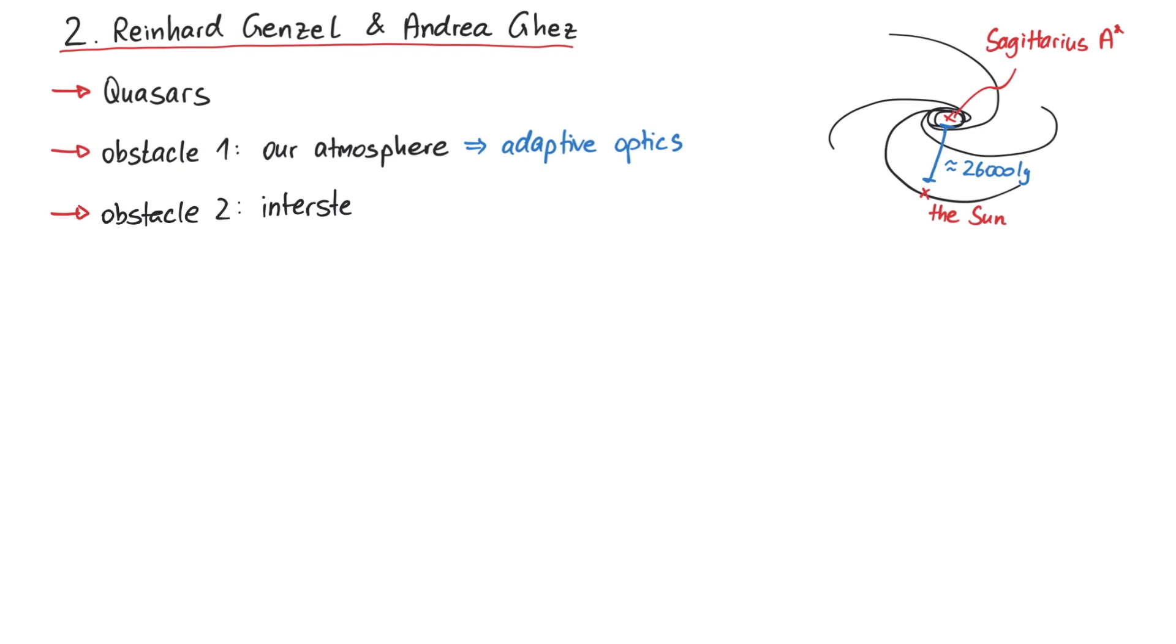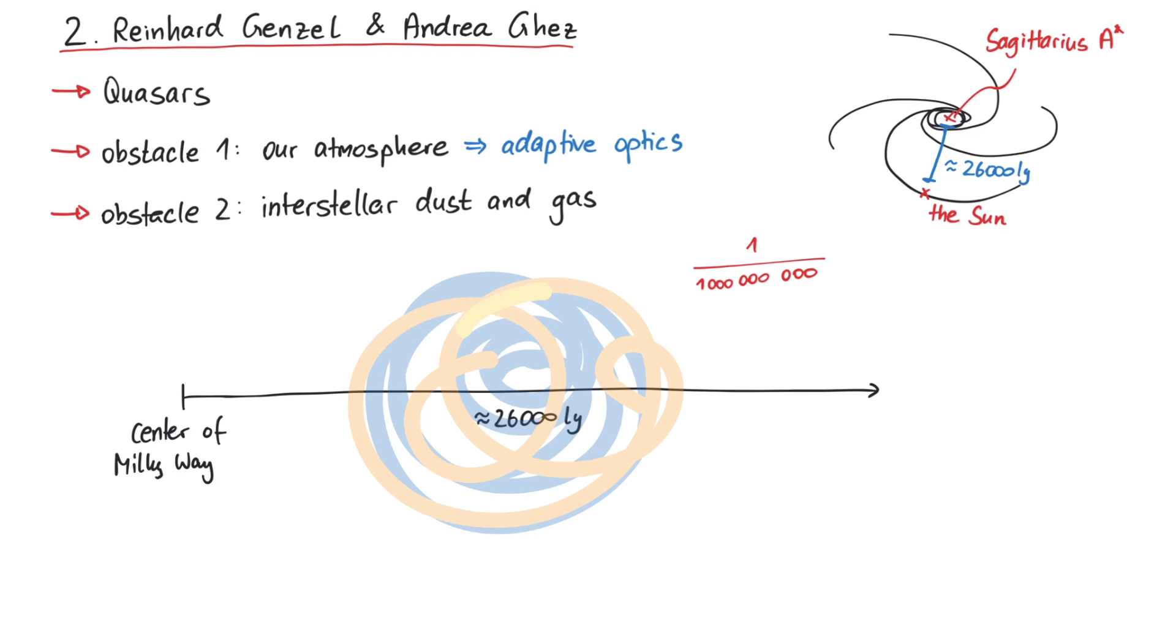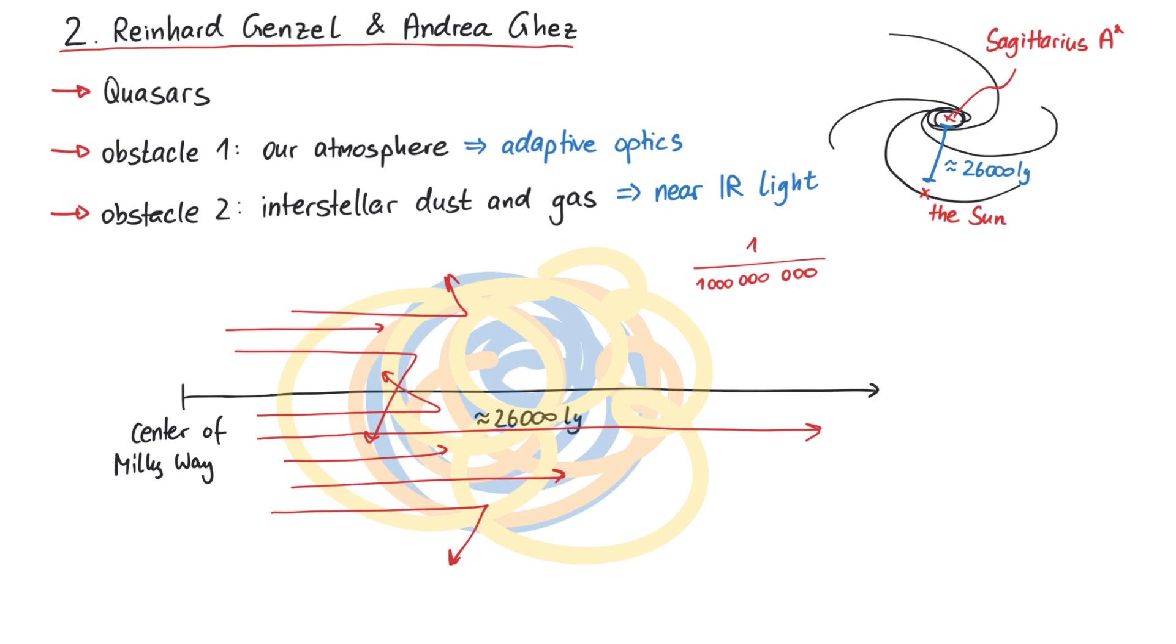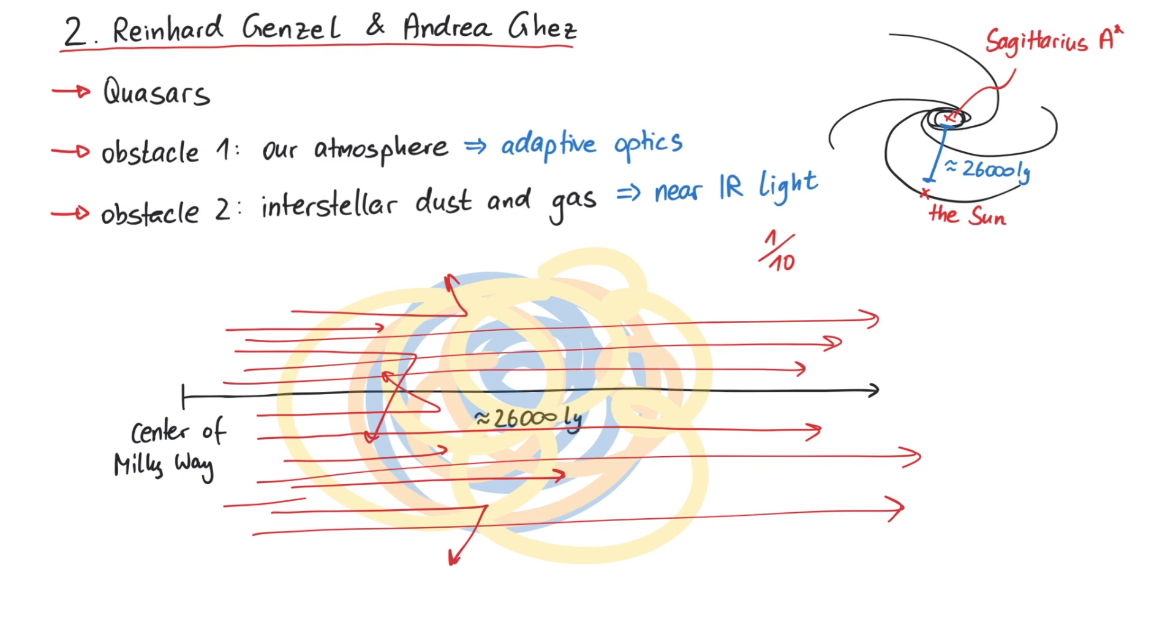Once the effects of our atmosphere are accounted for, the next problems arise due to interstellar dust and gas. If we rely on visible light to start at the center of the Milky Way galaxy and travel all the way to us, then only about one photon out of a billion photons will actually reach us. All others are somehow absorbed or deflected midway by the dust and gas. A solution to this problem lies in choosing a different wavelength of light. In particular, if we consider near-infrared light, which has a much larger wavelength than visible light, then about 1 in 10 photons will be able to reach our telescopes. This huge difference is due to the different mean-free path lengths, which strongly depend on the wavelength.